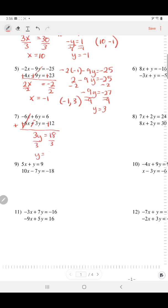6y minus 3y is 3y. 6 plus 12 is 18. Divide. Y equals 6. Plug 6 into y of either equation. Negative 6x plus 6 times 6 equals 6. Negative 6x plus 36 equals 6. Subtract 36. Negative 6x equals negative 30. Divide. X equals positive 5. Present your answer. X goes first, and then y.